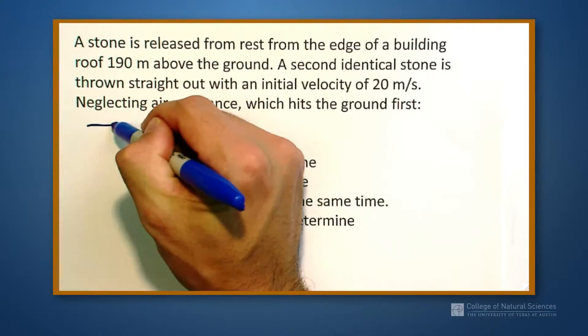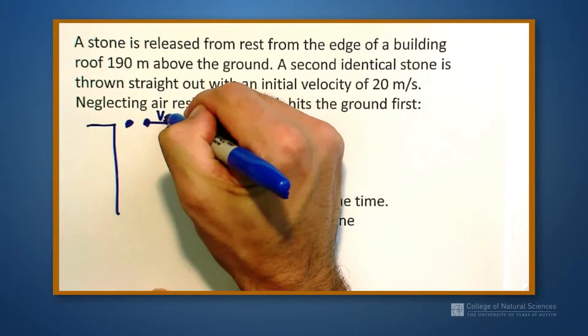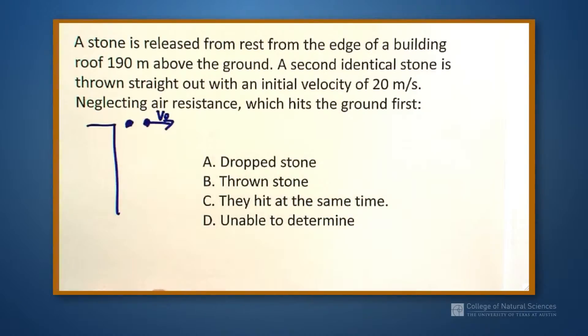So we have our building, we have one ball and a second ball. This one has an initial velocity of v naught. This guy has an initial velocity of 0.